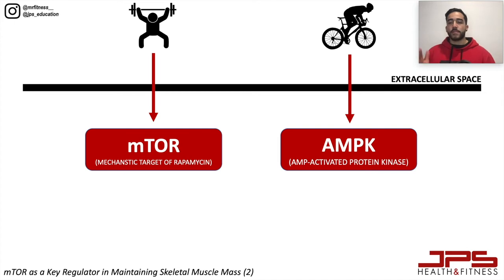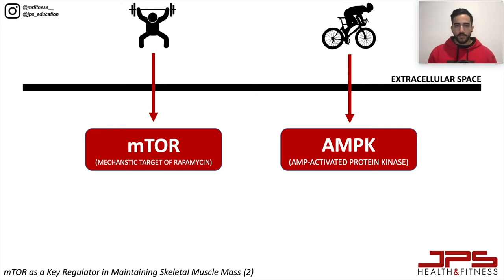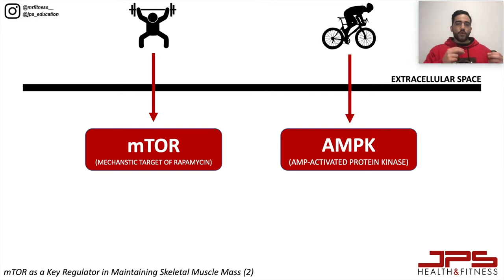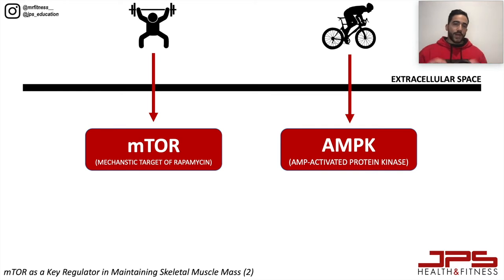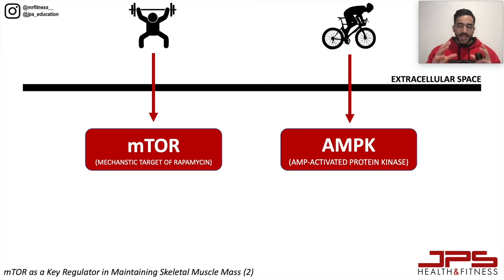As you can see in the graphics, mTOR is activated with resistance training, whereas AMPK is activated with aerobic training. To increase levels of muscle protein synthesis, our first point of call needs to be targeting the enzyme mTOR, because mTOR integrates all signals for growth — whether nutrition signals or training signals — and organizes hypertrophy within its cell.